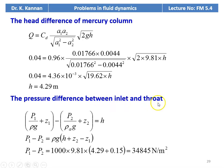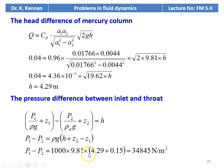For the pressure difference between inlet and throat, from Bernoulli's equation: P1/ρG + Z1 − P2/ρG − Z2 = H. Rearranging: P1 − P2 = ρG × (H + Z2 − Z1) = 1000 × 9.81 × (4.29 + 0.15) = 34,845 Newtons per meter square. The answer is 34,845 N/m², the pressure difference between inlet and throat.